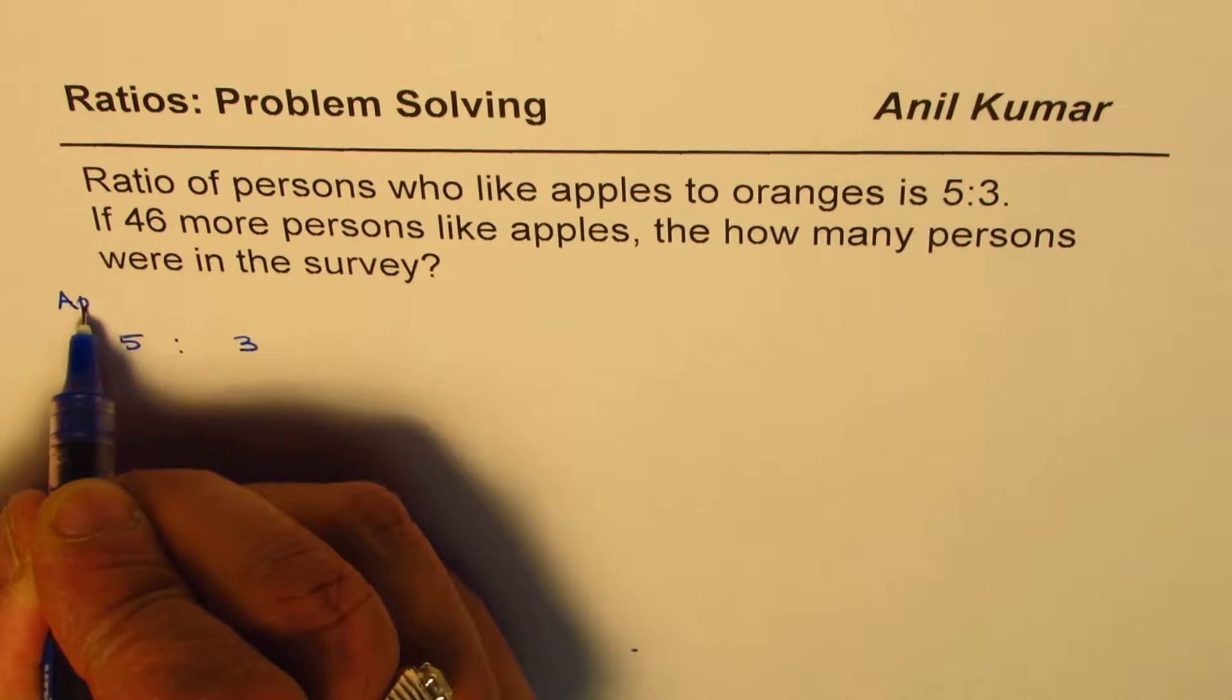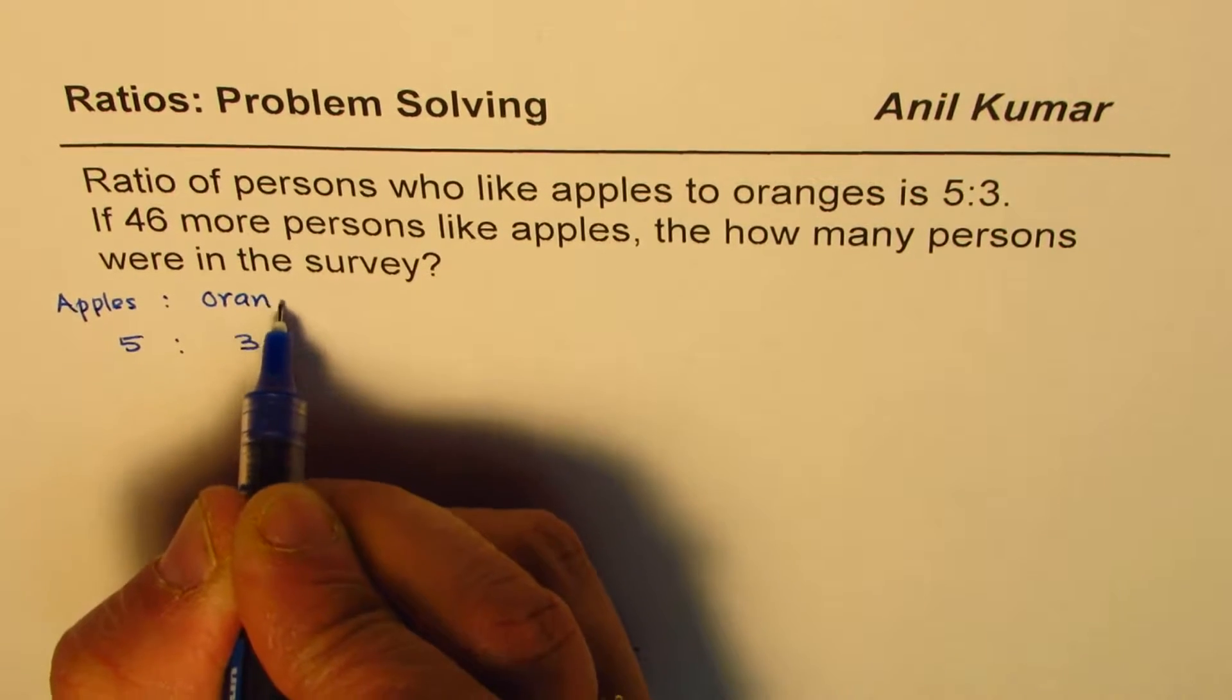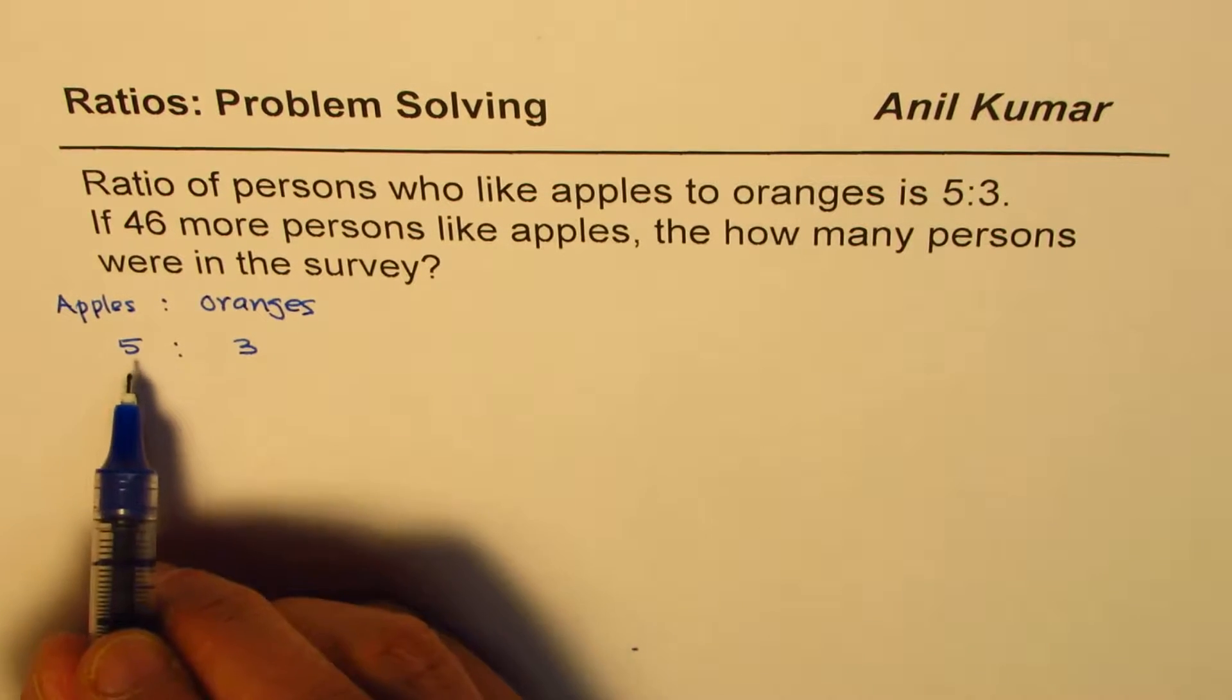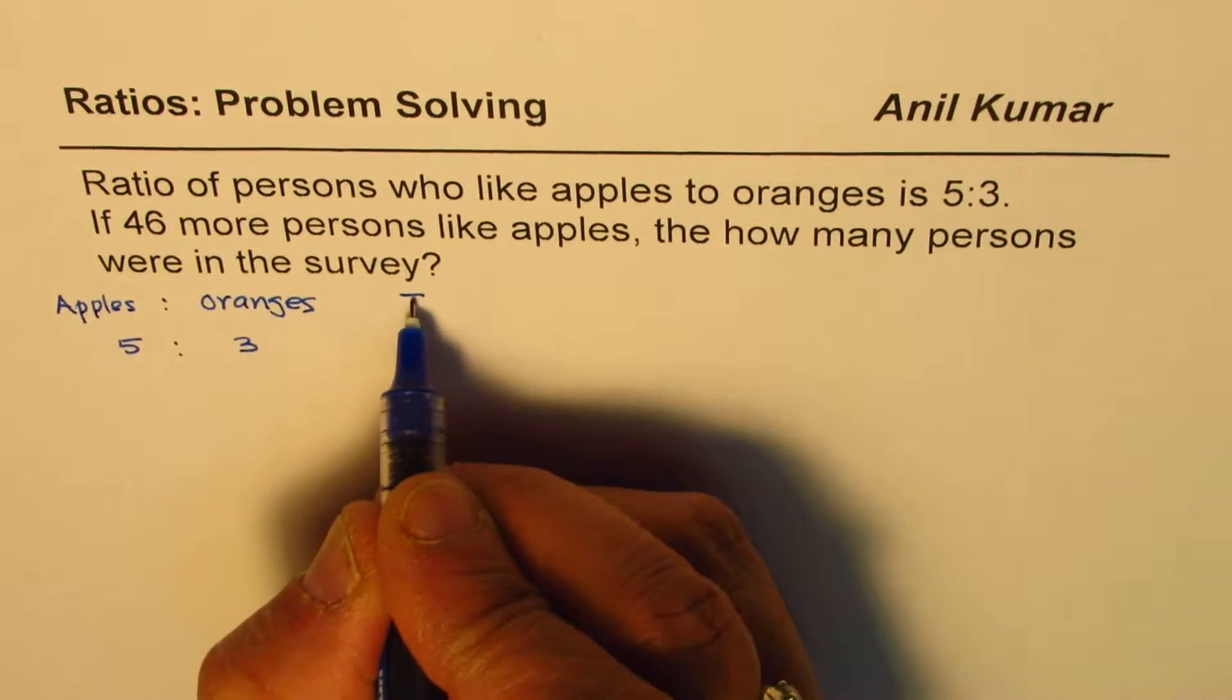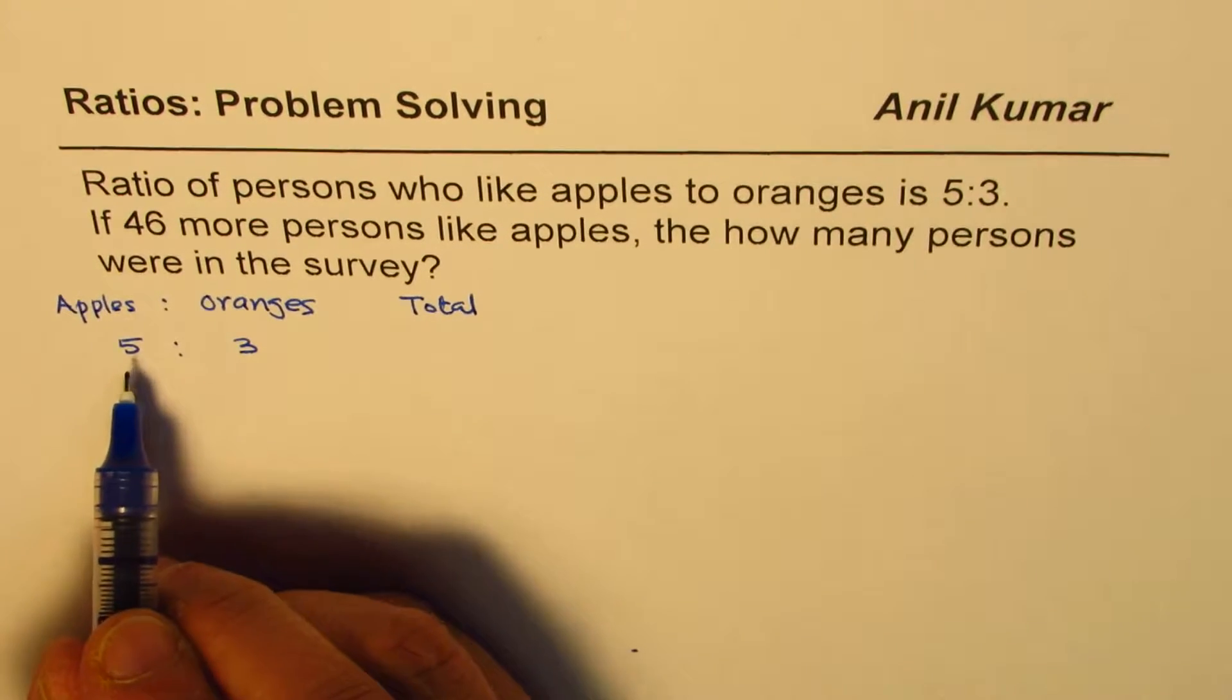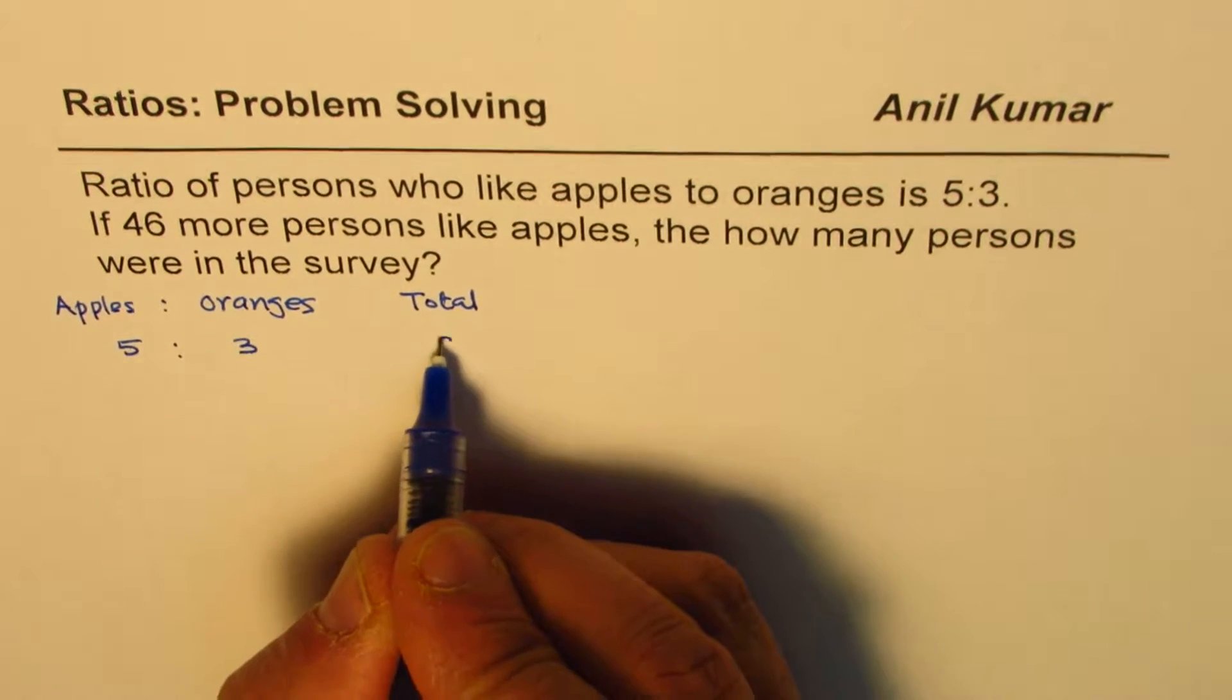So let me write apples to oranges. So when we are saying persons who like apples to oranges is 5 is to 3, what about total number of persons surveyed? If 5 like apples, 3 like oranges, then we are talking about 8 persons.